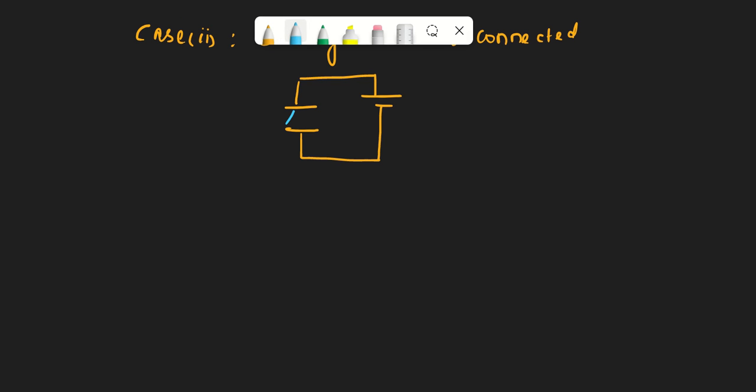Let's see case 2 now. Case 2 is battery remains connected, which means it's a parallel plate capacitor connected to a battery throughout and then we insert the dielectric medium. If this is the case, what are we going to do? This is the distance between the plates and this is capacitor C.